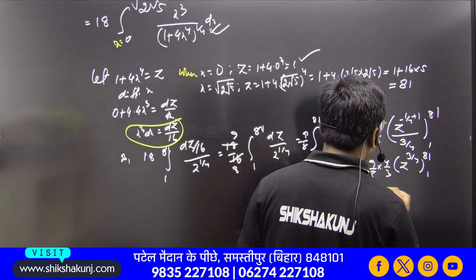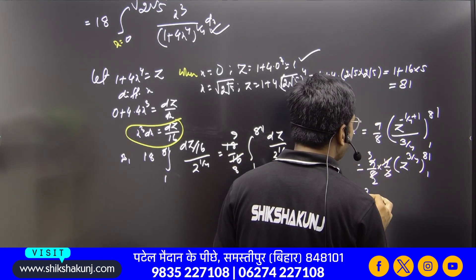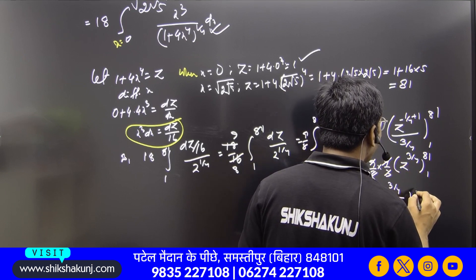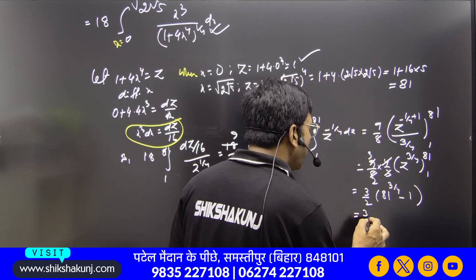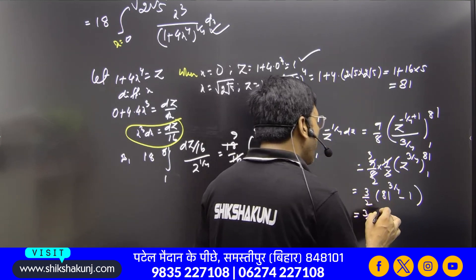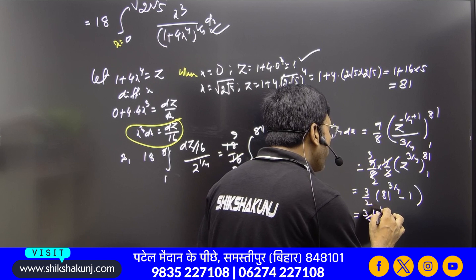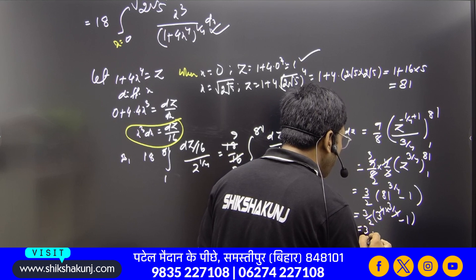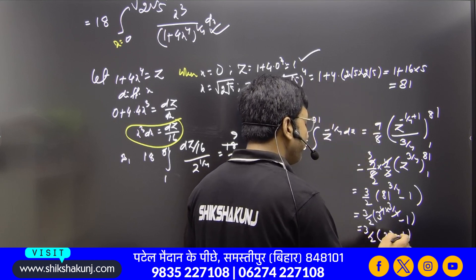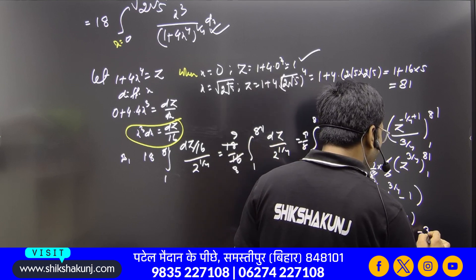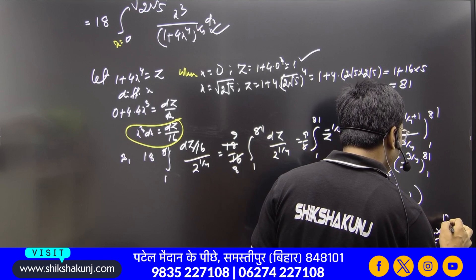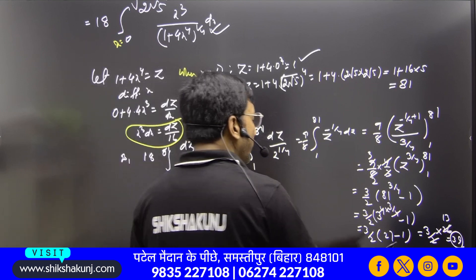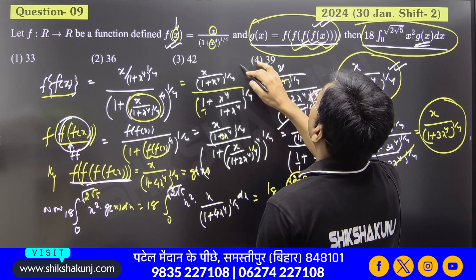Evaluate from 1 to 81: 81^(3/4) = (3⁴)^(3/4) = 3³ = 27. So (9/8) × (4/3) × (27 − 1) = (3/2) × 26 = 39. The answer is 39.